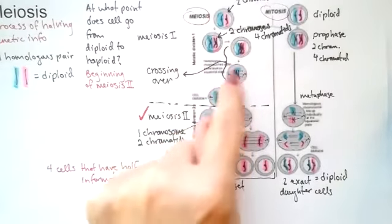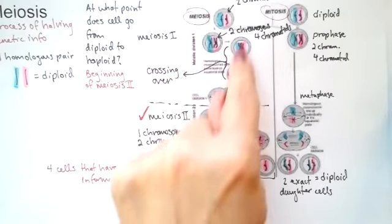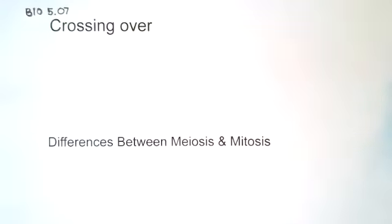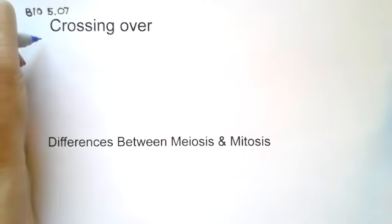So we're talking about what's going on right here when the chromosomes line up side by side. So this is a process. Let's start with blue. So crossing over. Let's say this is number one, and let's do some notes underneath this.